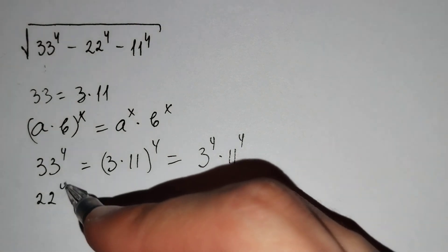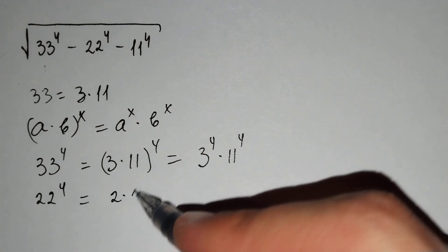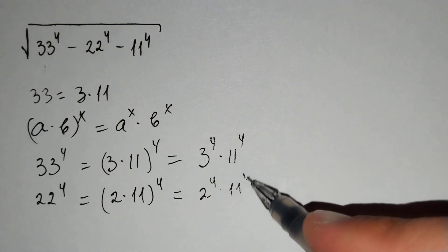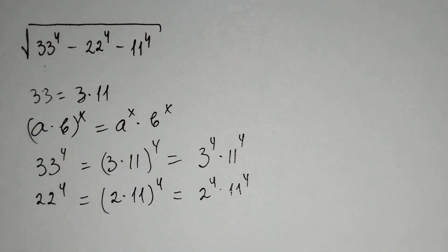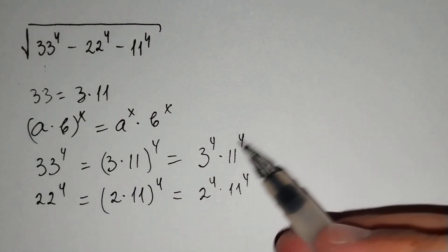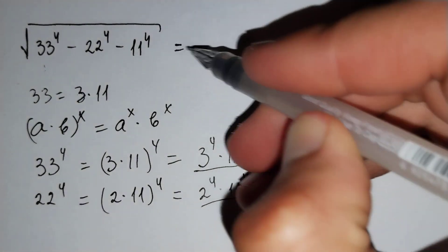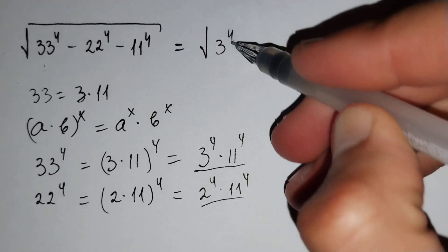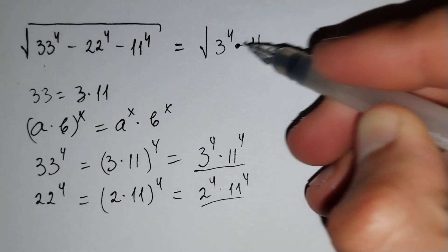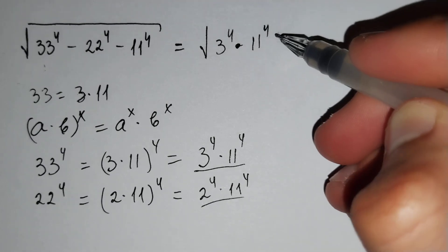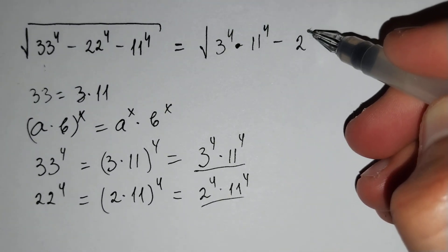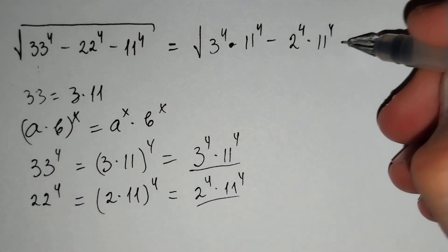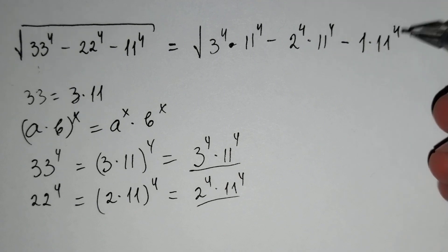And 22 to the power 4 equals (2 times 11) to the power 4, which equals 2 to the power 4 times 11 to the power 4 using the same formula. Then, let's substitute: this expression equals the square root of 3 to the power 4 times 11 to the power 4 minus 2 to the power 4 times 11 to the power 4, minus 1 times 11 to the power 4.